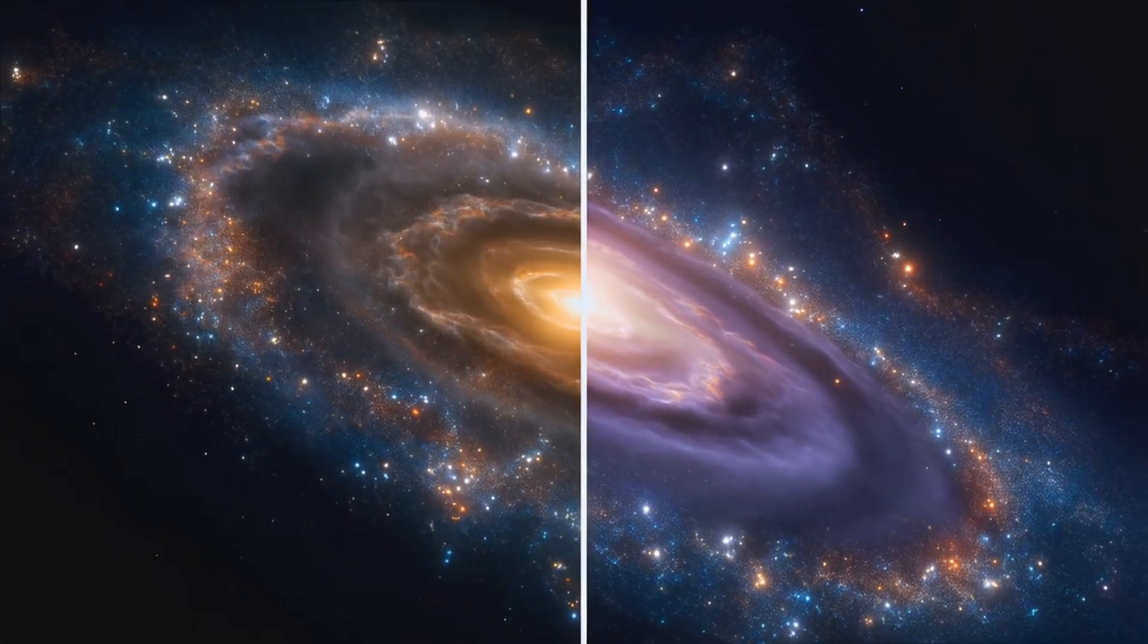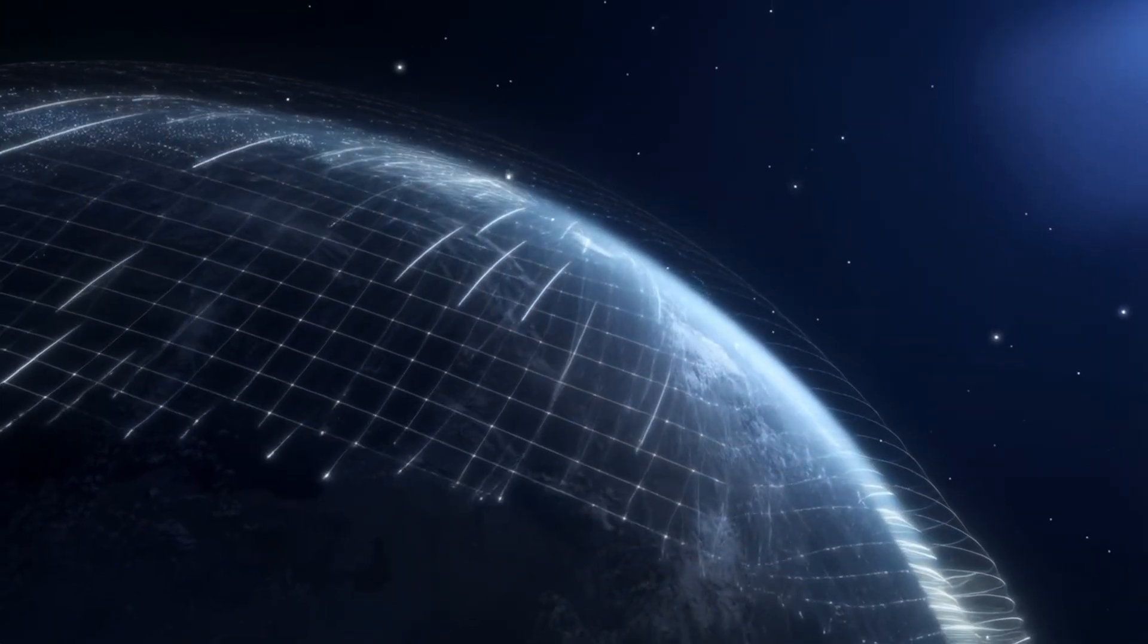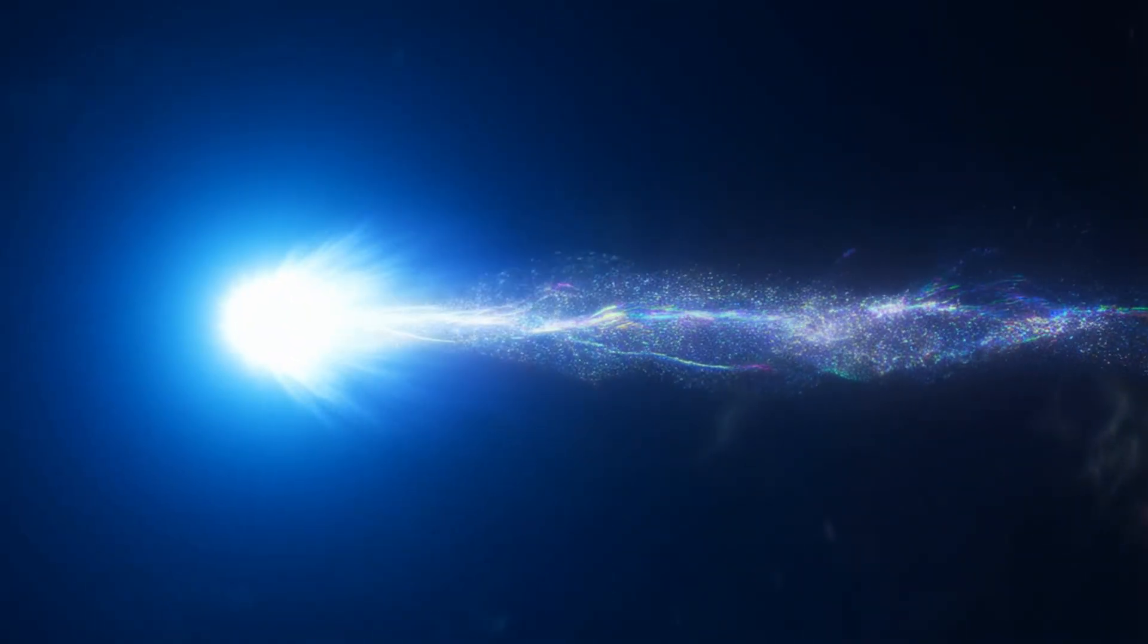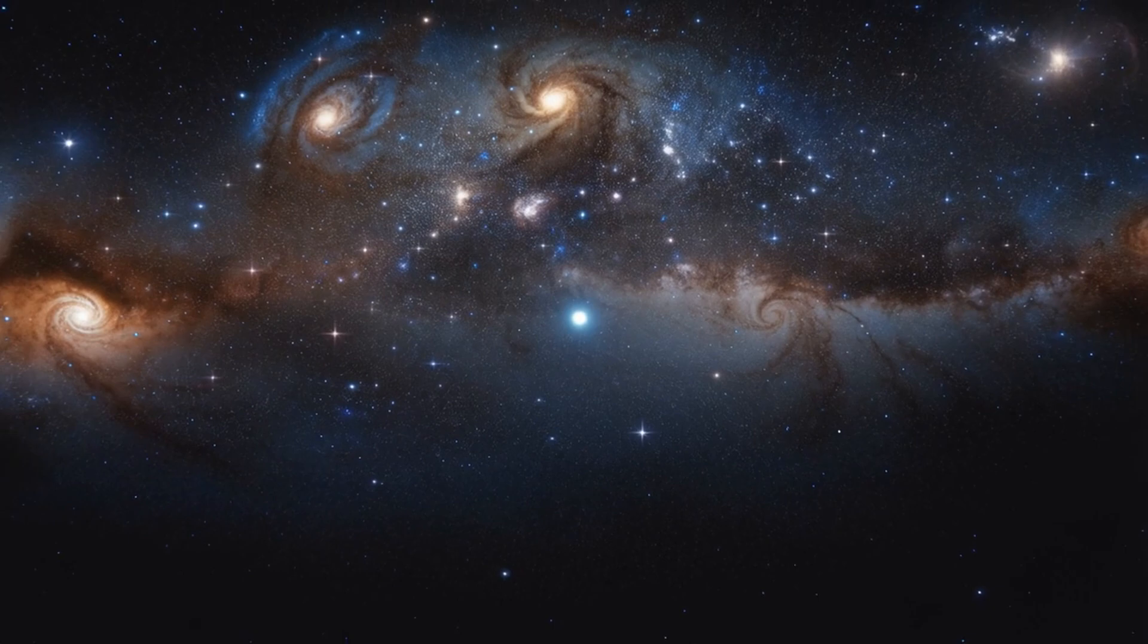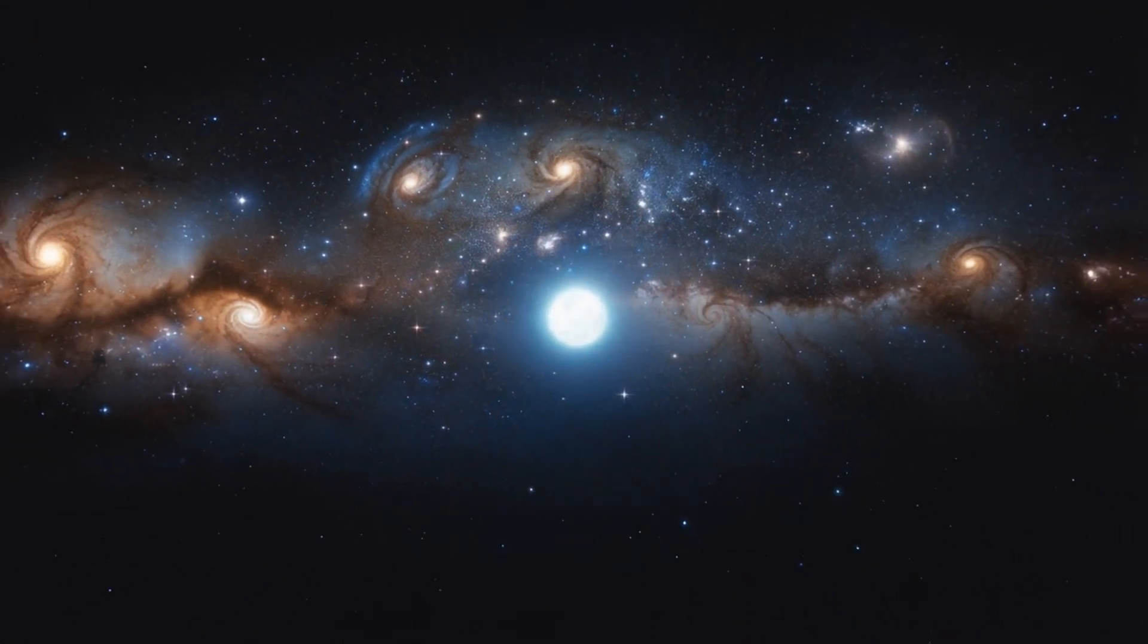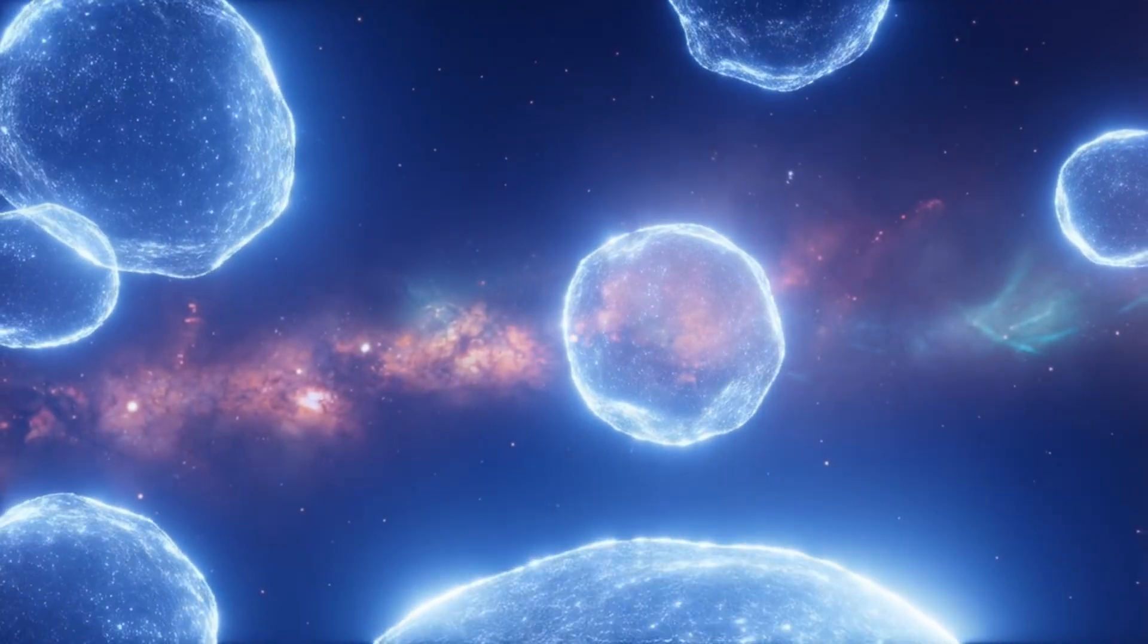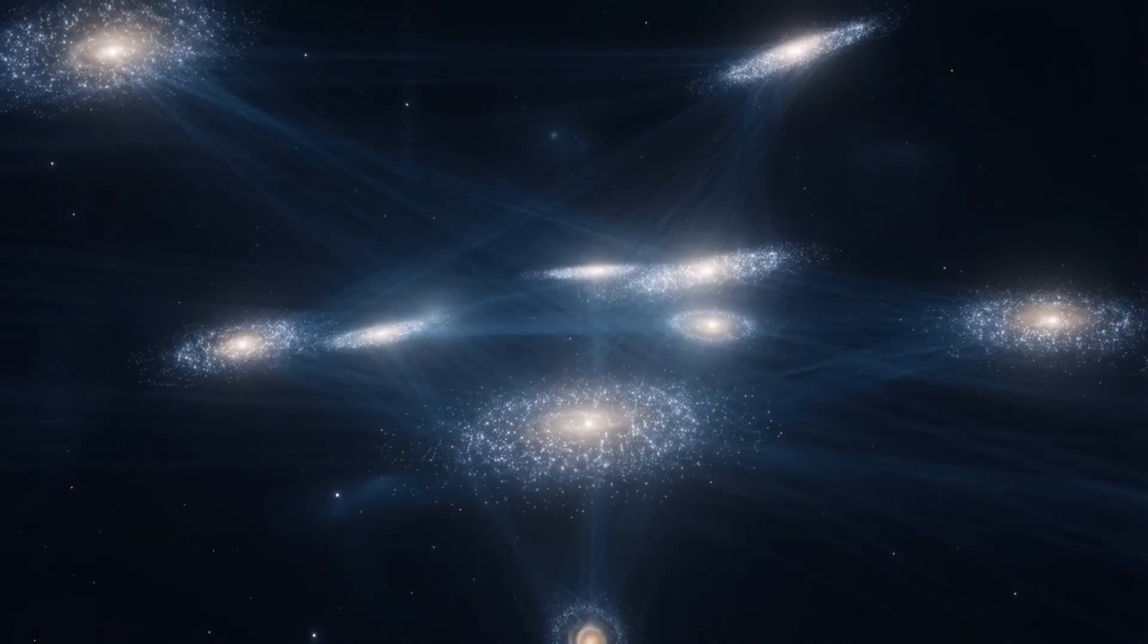And the answers we find, they often lead to bigger questions. Space, it turns out, is not just empty distance. It has structure, it stretches, it warps, it carries energy. It even has a temperature. The cosmic microwave background is still glowing from the birth of the universe, a faint afterglow of the Big Bang. But what came before the Big Bang? Some theories propose a quantum foam, a seething field of probability and randomness where particles blink in and out of existence. Others suggest a previous universe collapsed in on itself, triggering ours in a cycle of cosmic rebirth. And then there's the idea that the universe needs an observer to exist. In quantum mechanics, particles exist in multiple states until they're observed, a concept known as wave function collapse. Could it be that consciousness itself is woven into the structure of reality?